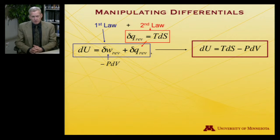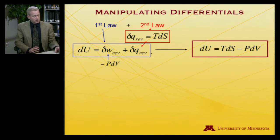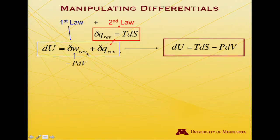In particular, I want to start with what we have available now from the first and second law of thermodynamics. So the first law says that dU is equal to del W reversible plus del Q reversible. And we know, for an ideal gas at least, the reversible work is minus PdV.